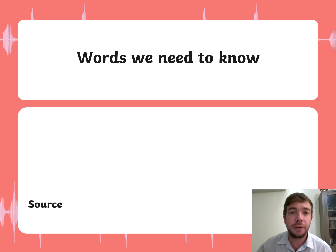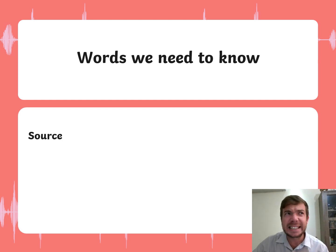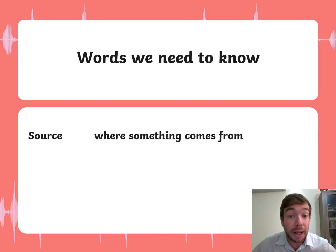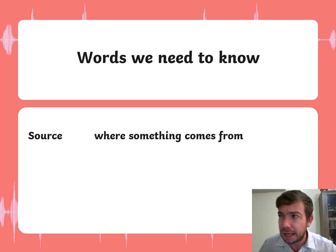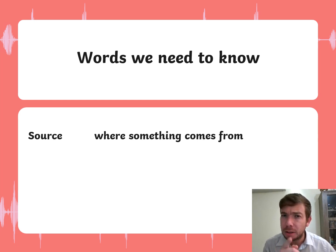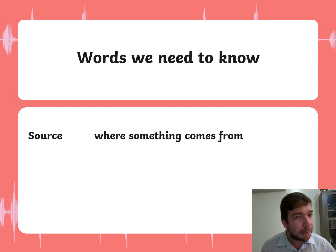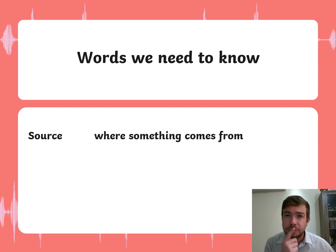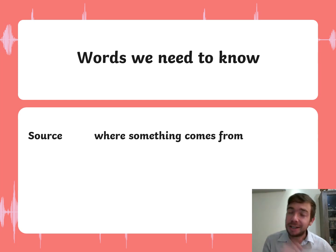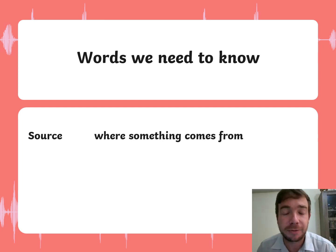The first word is 'source.' What does that mean? Source means where something comes from. So if I ask you — what is the source of milk? Where does milk come from? Did you say the shop? Yes, that is true, but let's think a little further. Where does it originally come from? If you said cow, then you are correct. Yes, the source of milk is from the cow.